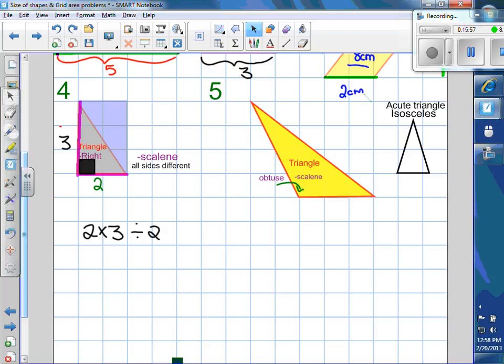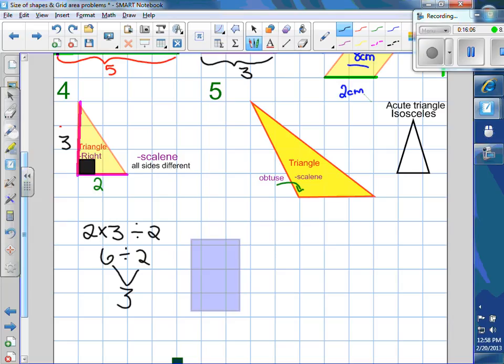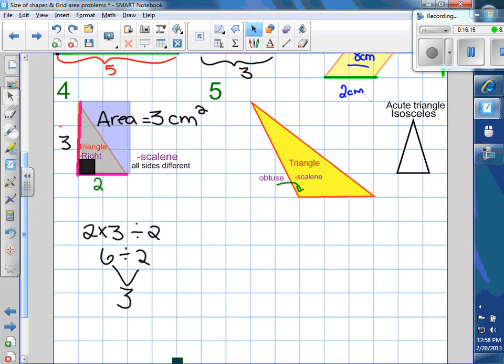So we say this triangle has an area of three centimeters squared. Why do you divide it by two? Because that triangle only takes up half of the rectangle. We use the rectangle formula. So we could always, so every triangle is half of some rectangle.